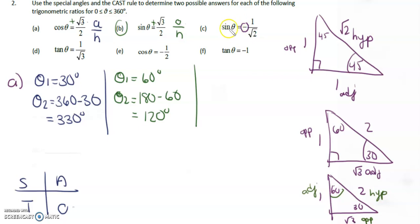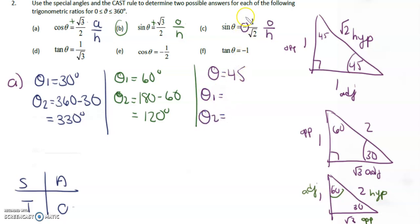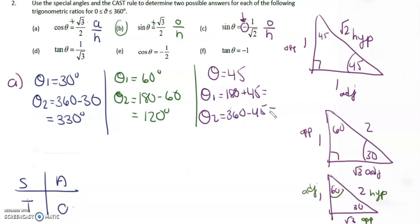For C — sine θ equals negative 1 over root 2. We're asking when is the opposite 1 and the hypotenuse root 2, which is for 45 degrees. But because sine is negative, our θ₁ and θ₂ will be different. Sine is negative in the T quadrant — 180 plus 45 — and also negative in the C quadrant — 360 minus 45. So our two answers are 225 degrees and 315 degrees.